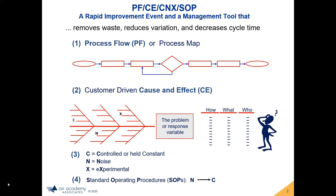We can use basically four symbols to create a decent process flow diagram. Ovals typically specify the start and stopping points. Rectangles represent a step in the process. A diamond-shaped box is a branching point or decision point in the flow. Arrows indicate the direction of flow, and we can have loops which tend to indicate rework.